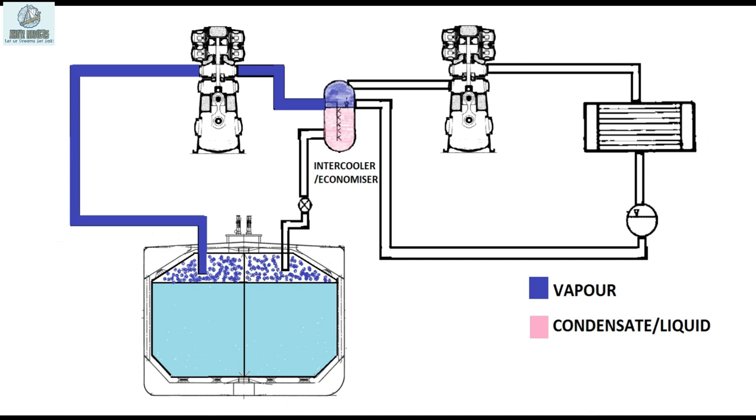Cargo vapors after first stage compression goes into intercooler. The pressure inside intercooler is close to first stage discharge pressure. The temperature of vapor is reduced from superheated to saturation temperature in the intercooler. From the intercooler the vapor is returned to second stage compression.